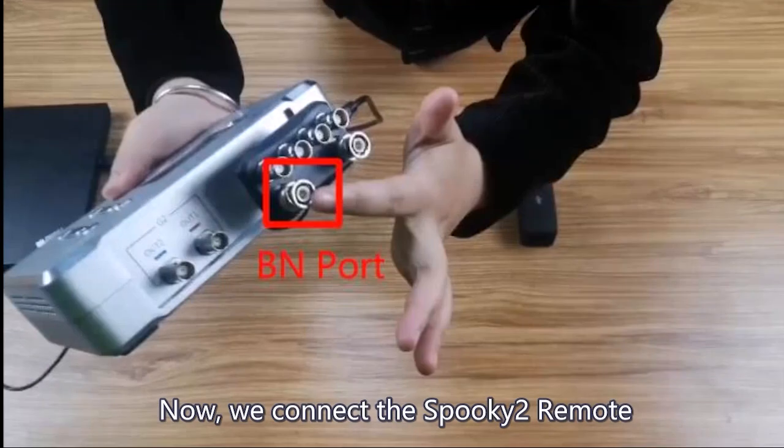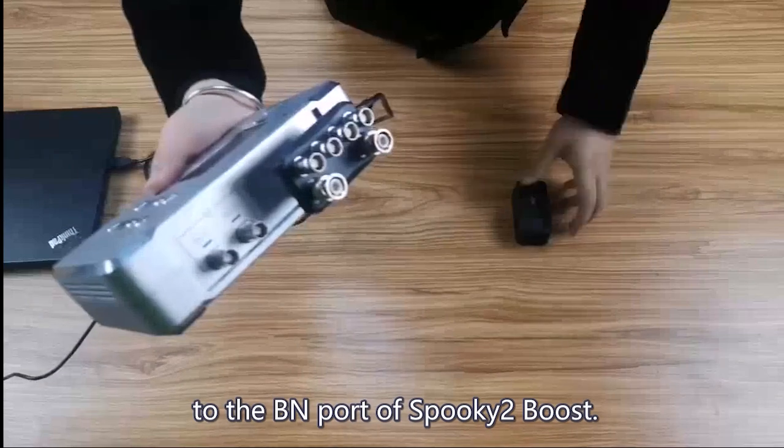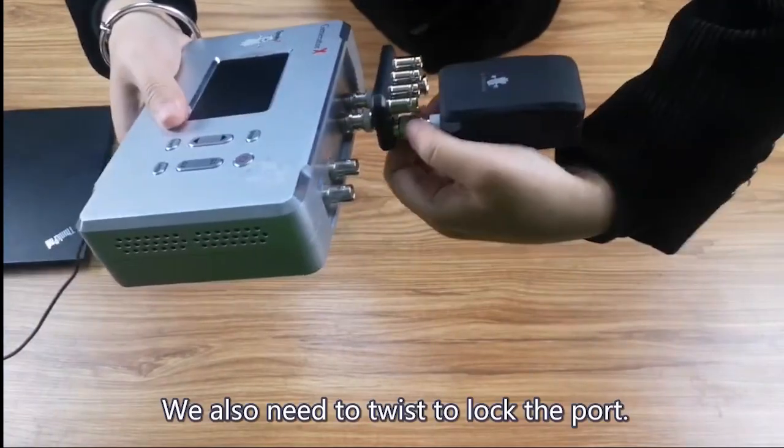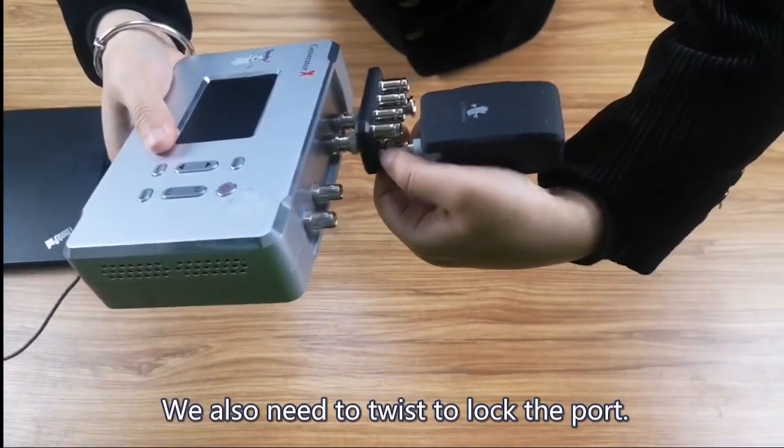Now, we connect the Spooky2 Remote to the BN port of the Spooky2 Boost. We also need to twist to lock the port.